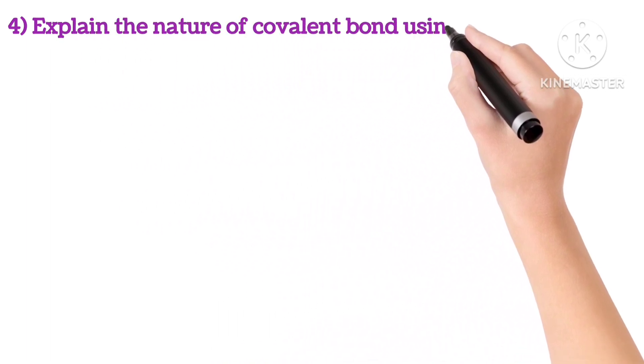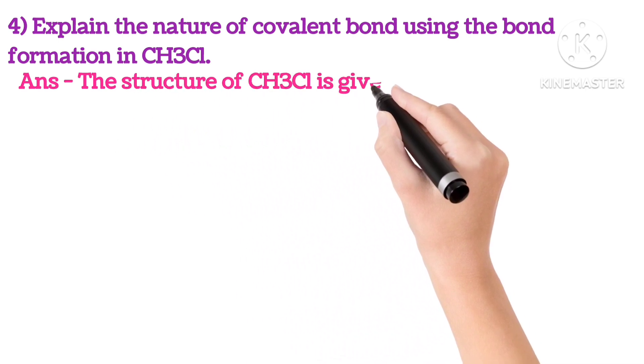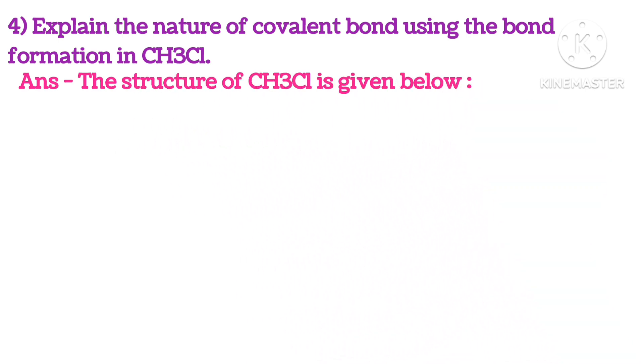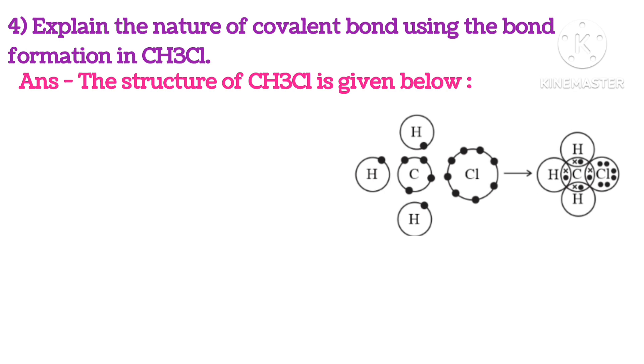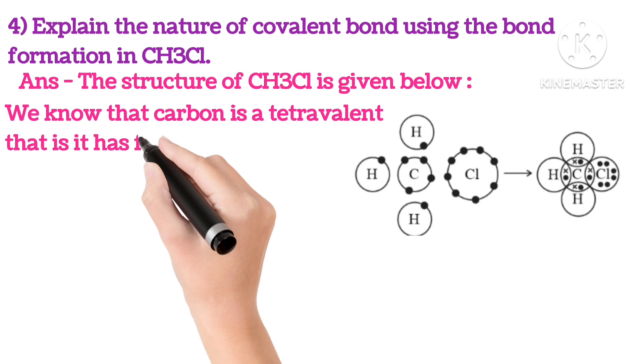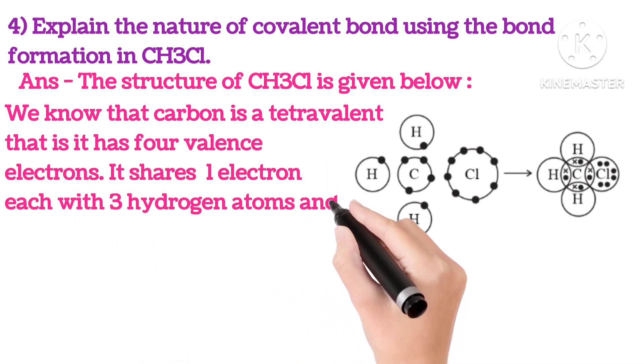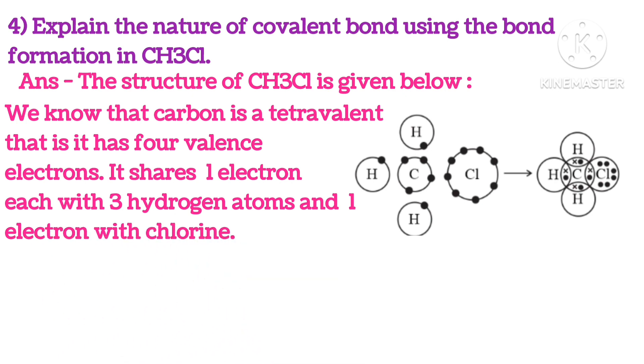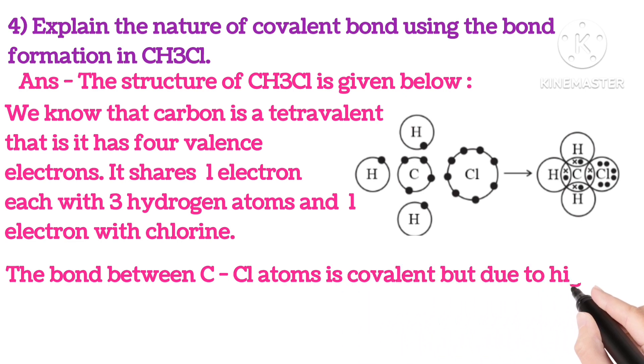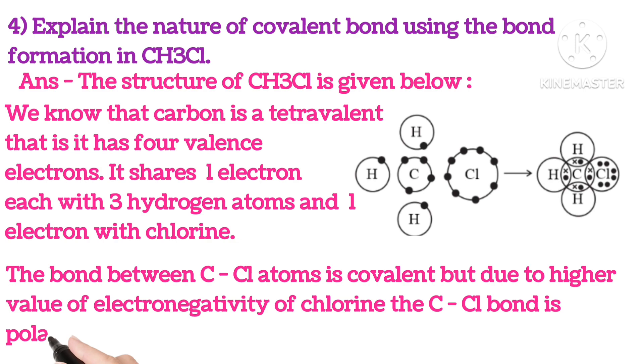Fourth, explain the nature of covalent bond using the bond formation in CH3Cl. The structure of CH3Cl is given below. We know that carbon is tetravalent, that is, it has four valence electrons. It shares one electron each with three hydrogen atoms and one electron with chlorine. The bond between the C and Cl atom is covalent, but due to higher value of electronegativity of chlorine, the C-Cl bond is polar in nature.